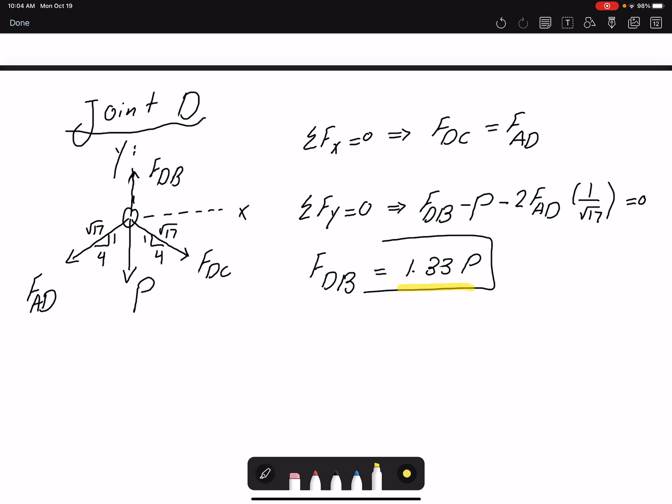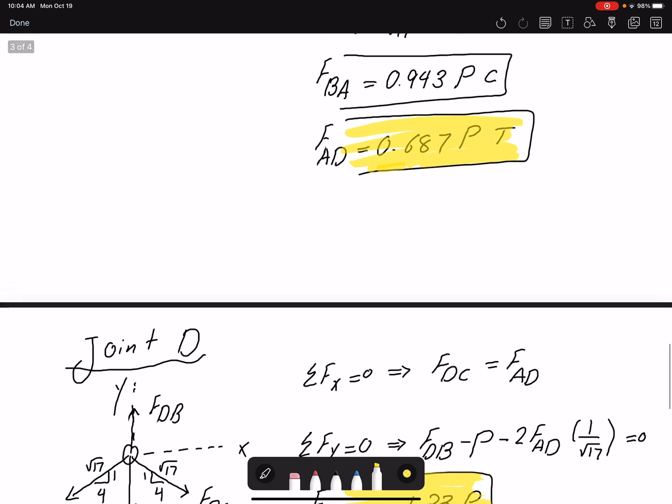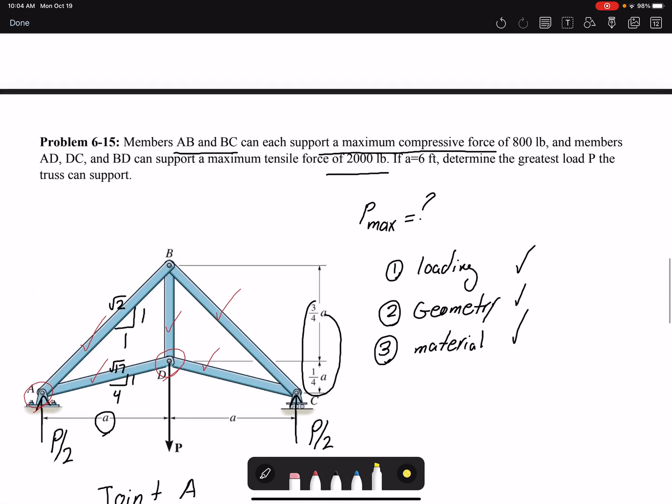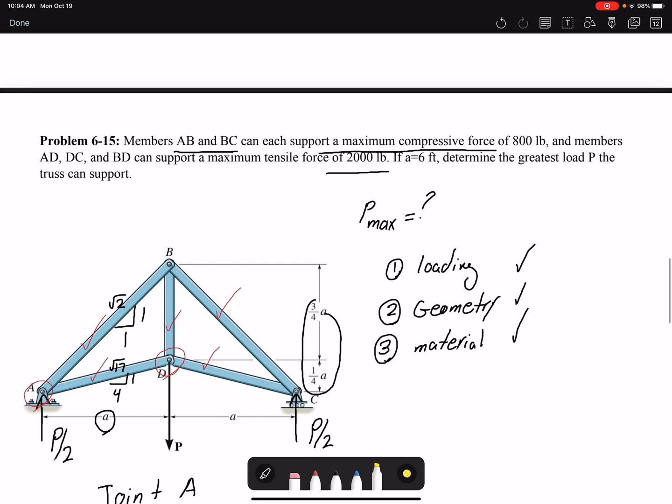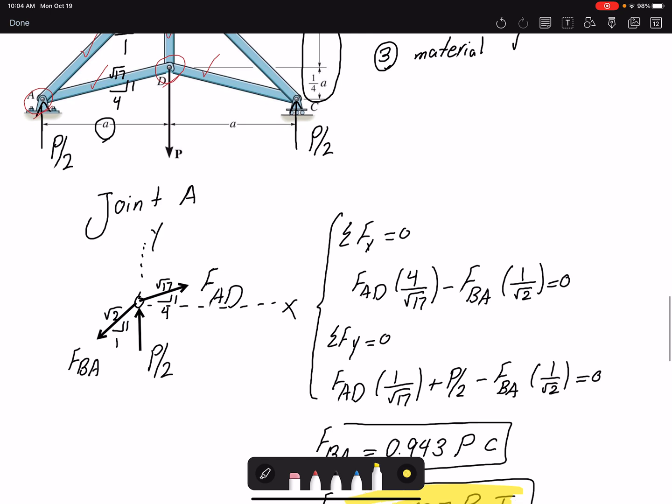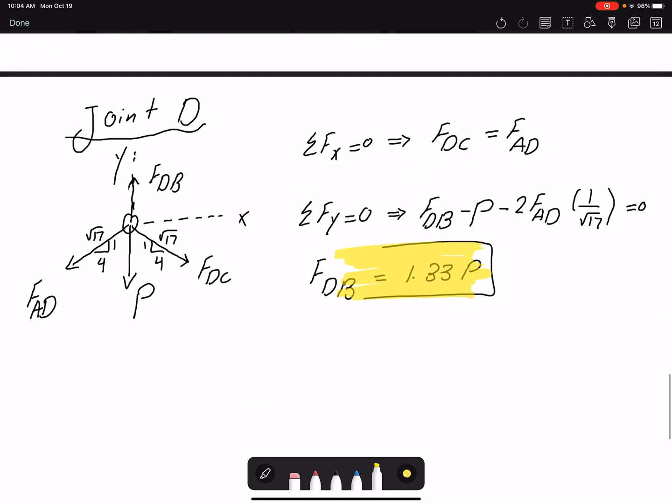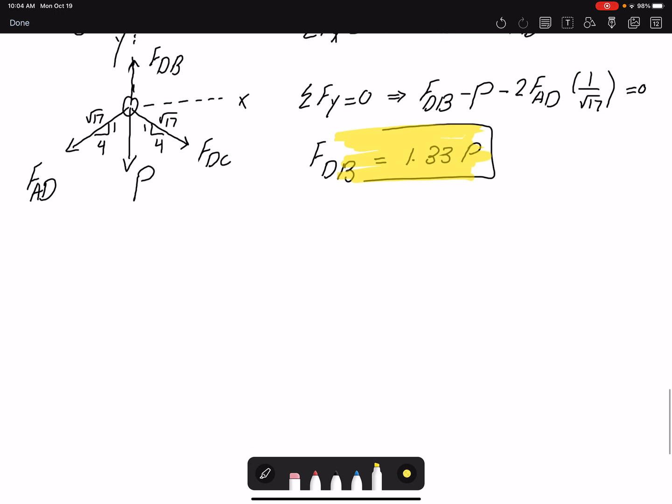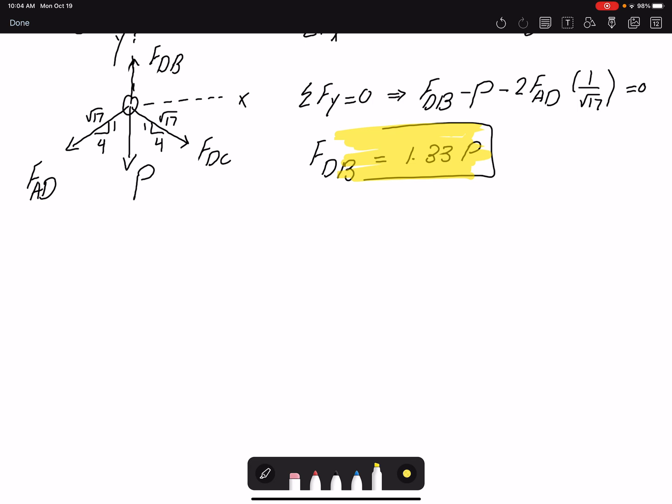If we look at our forces, it looks like this one is carrying the largest load. So this one should be the limiting member. But we need to pay attention that the compressive strength and tensile strength of our members are not going to be the same. The compressive strength that our members can have would be 800 pounds and the tensile limit would be 2,000 pounds.